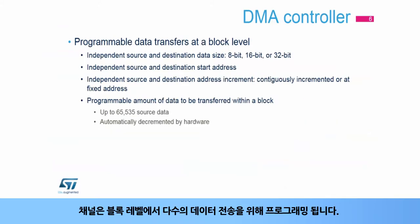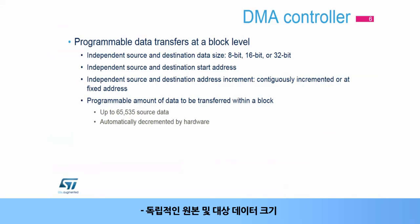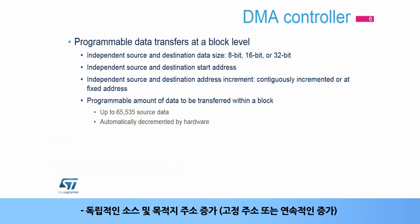The software can control a channel via separated interrupts and/or flags upon programmable events, such as a block transfer complete and/or a half block transfer complete and/or a transfer error. A channel is programmed for a number of data transfers at a block level with independent source and destination data size, independent source and destination start address, independent source and destination address increment, either contiguously incremented or at a fixed address, and a programmable amount of data to be transferred within a block.